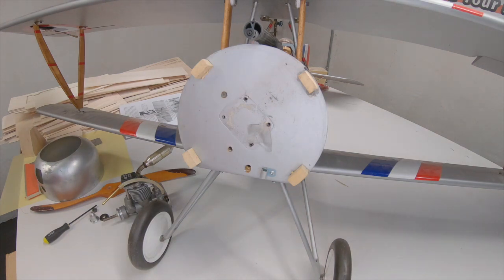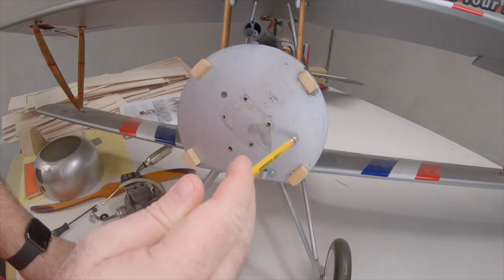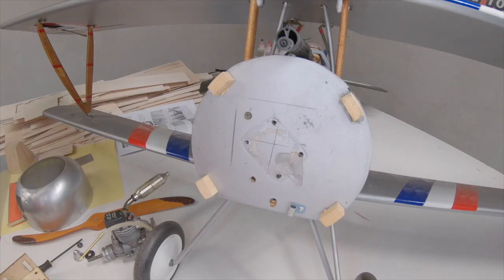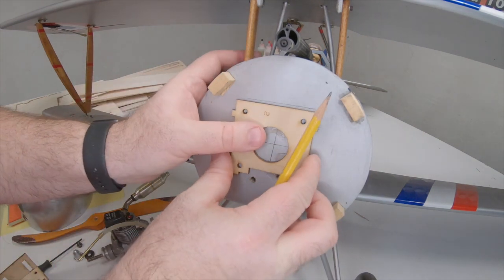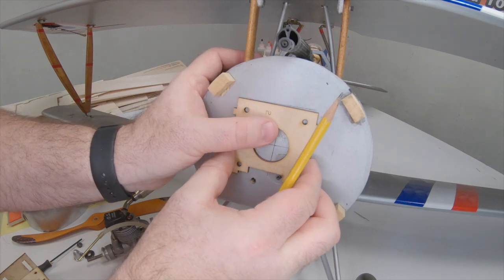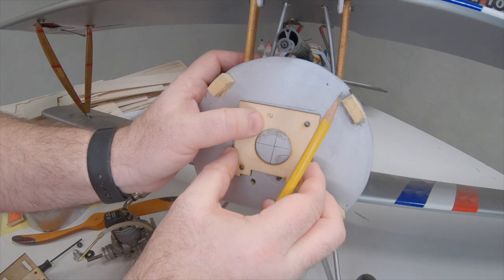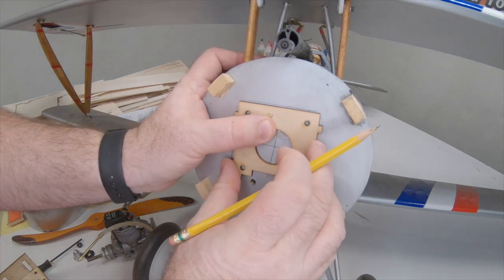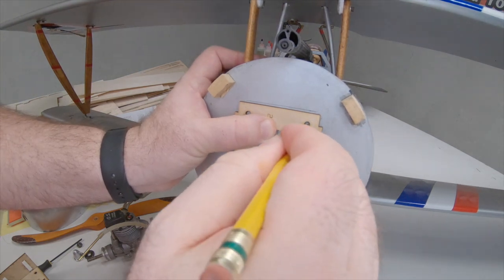One of the things you're going to want to do in this process is find the center of your firewall. You can do that simply by measuring. Once you have your center mark, you can take your part number two from your conversion kit and line it up on the center, make sure you mark it, and then mark your holes where you're going to drill for your mount.